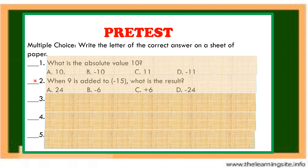Number 2. When 9 is added to negative 15, what is the result? Letter A, 24. Letter B, negative 6. Letter C, positive 6. Letter D, negative 24.